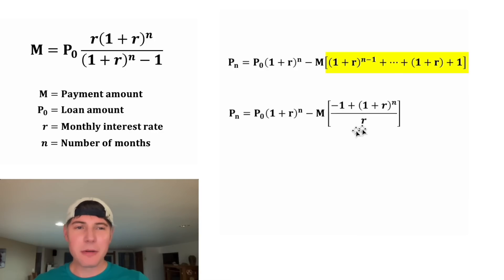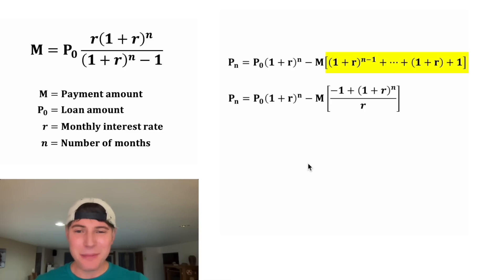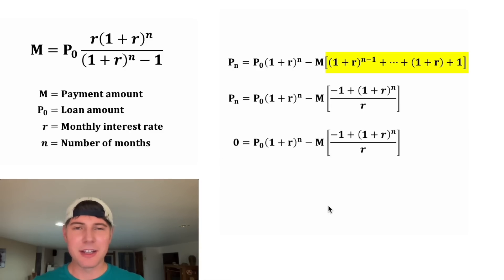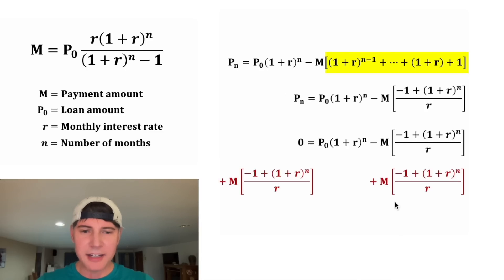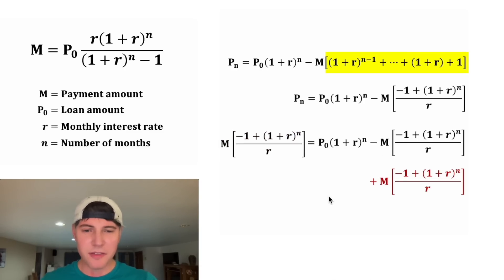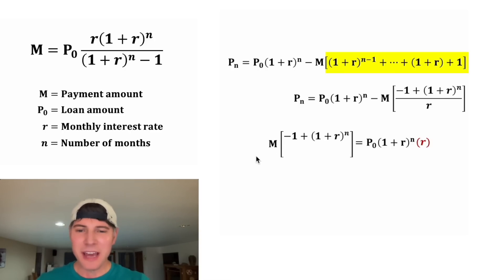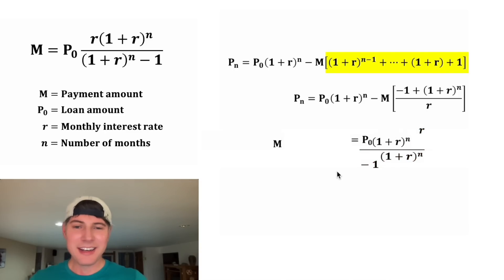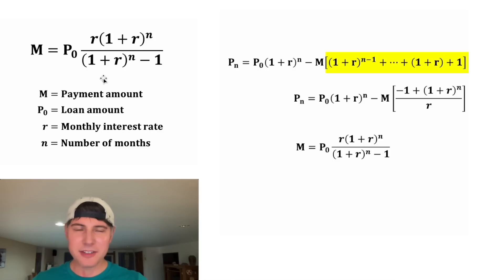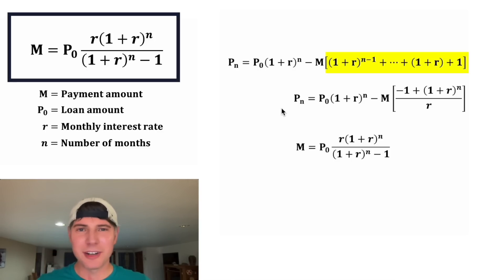We now have a clean formula for the balance after n months. The next step: we want the balance after n months to equal zero — that's when the loan is paid off. So we set P_n = 0 and solve for m. Adding m times the S_n expression to both sides cancels the negative term on the right. Multiplying both sides by r eliminates the denominator. Finally, dividing both sides by (1+r)^n − 1 isolates m. We now have our monthly payment formula, and it matches the equation they gave us at the start. So now I feel like we can trust this formula. How exciting — thank you!